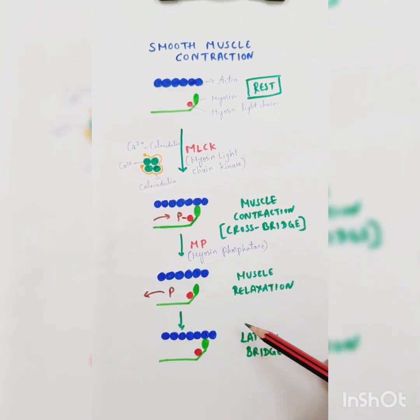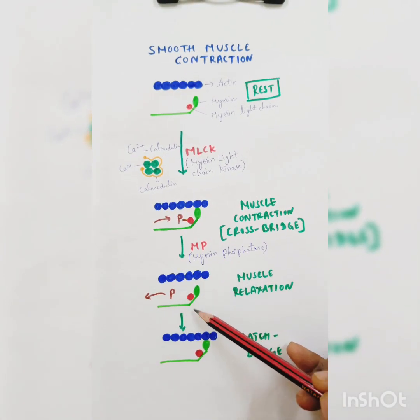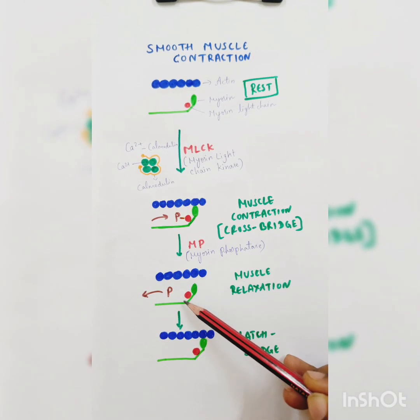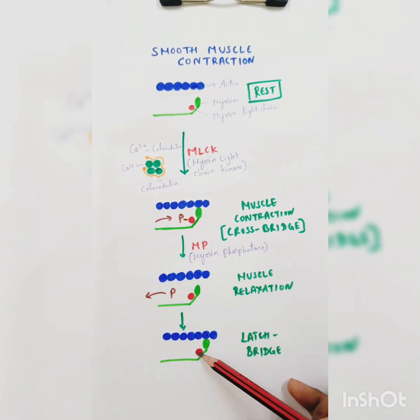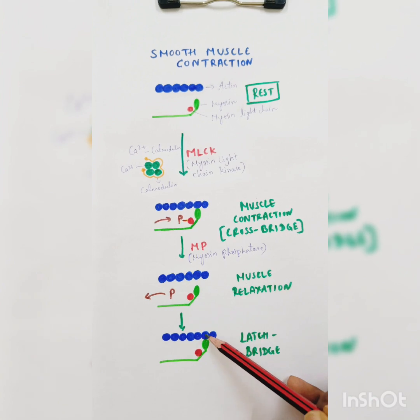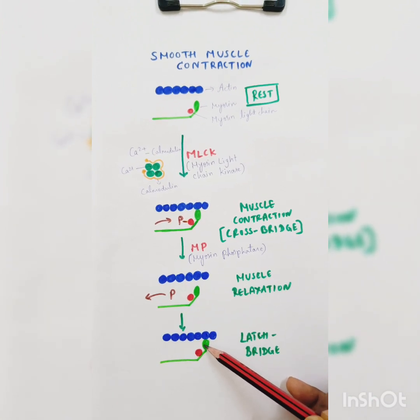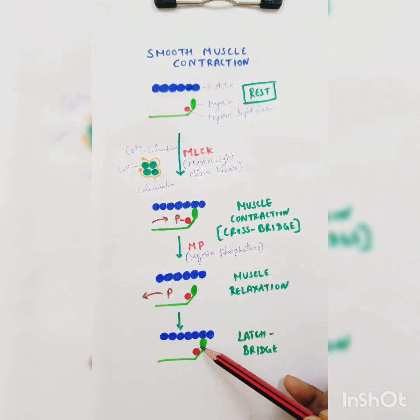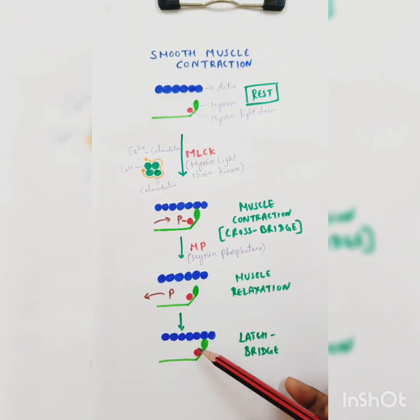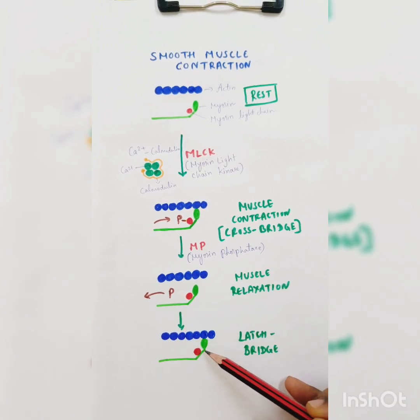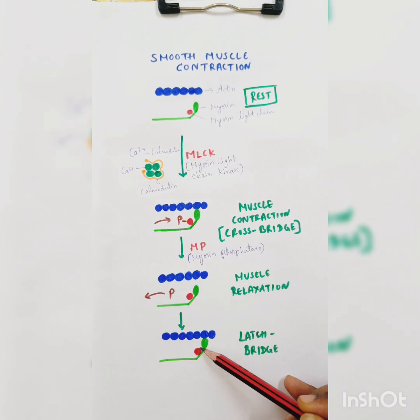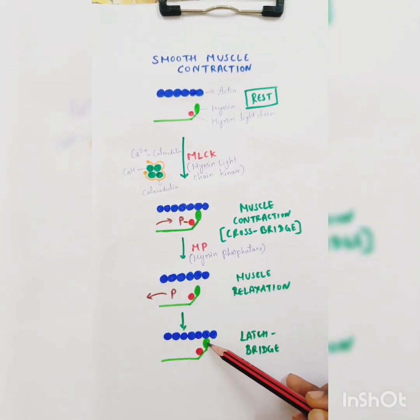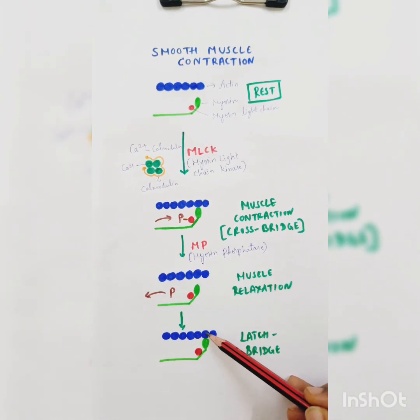In the latch bridge mechanism, the myosin head is dephosphorylated - there is no phosphate group - but still the cross-bridge is there. The rate of cross-bridge cycling is decreased, meaning the cross-bridge is not getting separated easily from the actin molecule even after dephosphorylation. This is like the myosin head is latched onto the actin molecule.